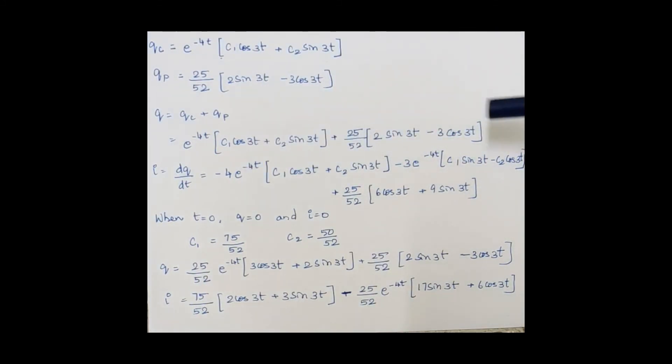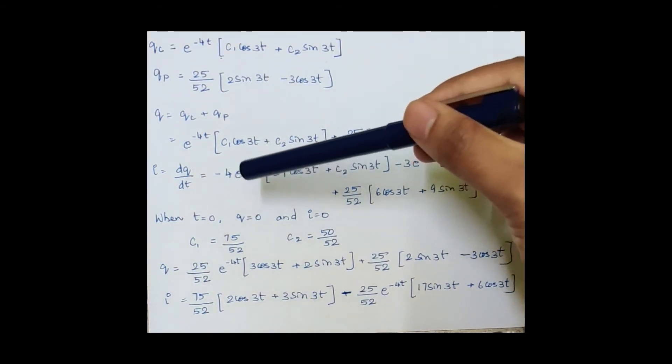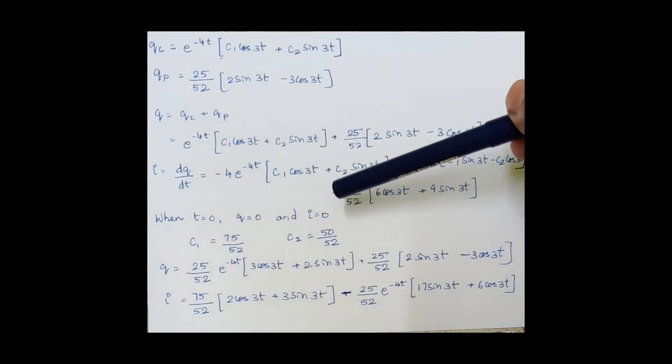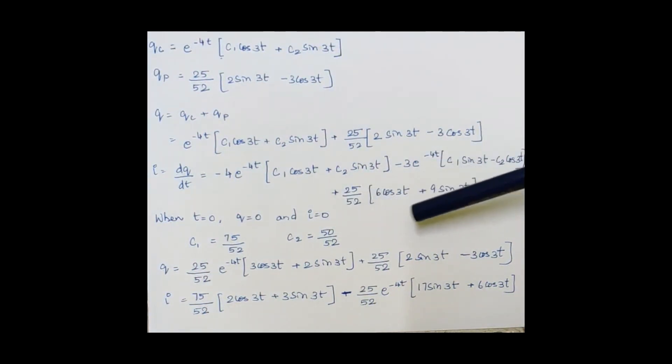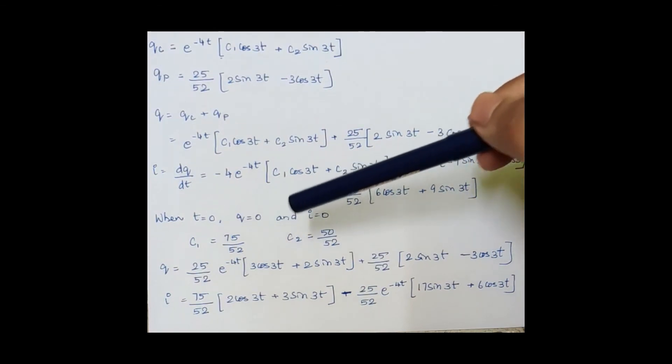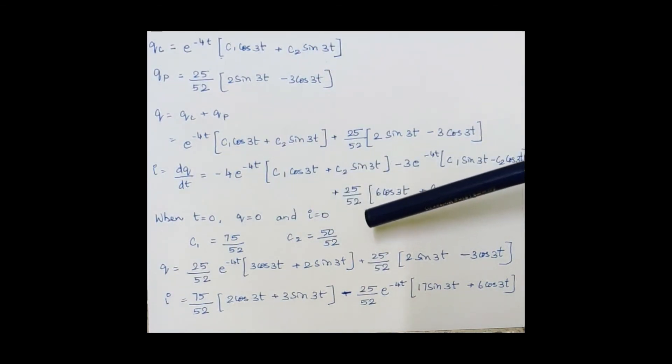Now current i is given by dq/dt, that is differentiation of this equation. So we obtain this as the differentiation. And now we have initial conditions as when t = 0, q = 0 and i = 0. When we apply these to the above two equations, we get c₁ = 75/52 and c₂ = 50/52.